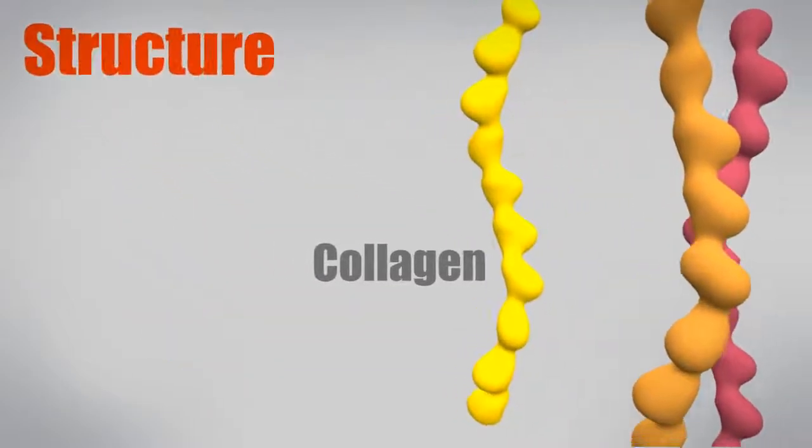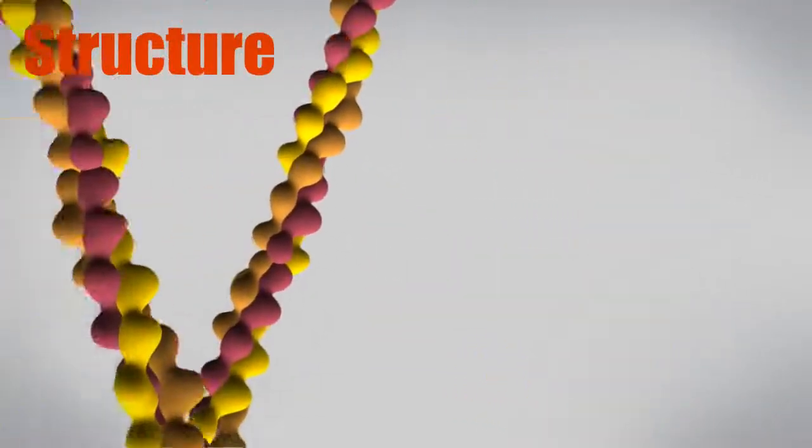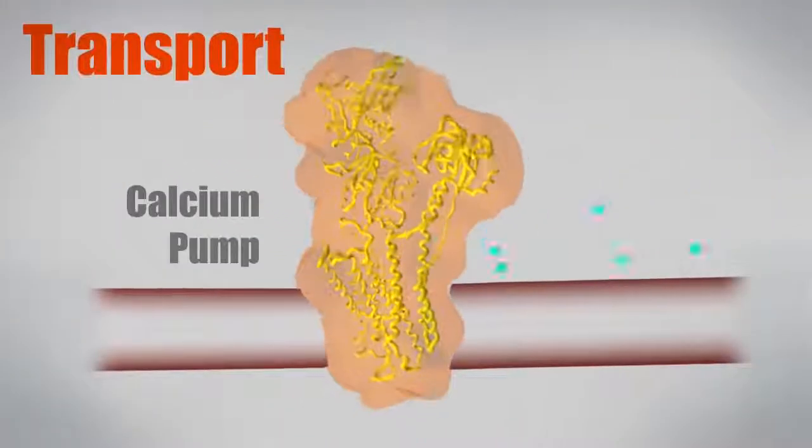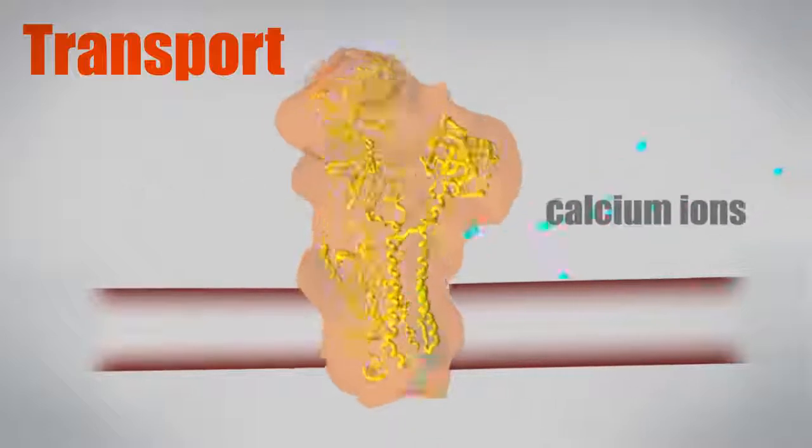Collagen forms a strong triple helix that is used throughout the body for structural support. The calcium pump moves ions across cell membranes, allowing the synchronized contraction of muscle cells.